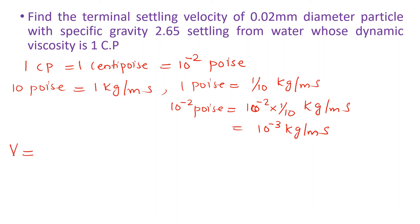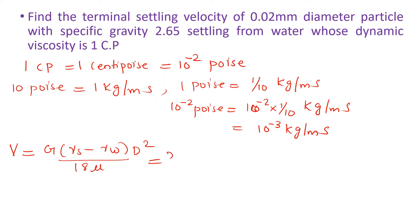By Stokes' law equation, V equals g × (γs − γw) × D² / (18μ). G value is 9.81 m/s² — note this is small g, not capital G. So g = 9.81 m/s². Gamma s equals G × gamma w, where G is 2.65.